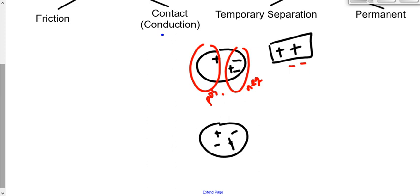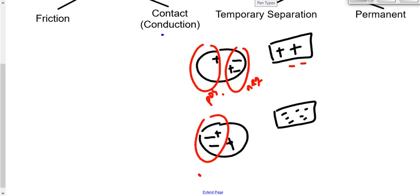Bringing a negative object nearby: the protons go nowhere because of the strong nuclear force, but the electrons get pushed away to one side, leaving that side negative and the opposite side positive. This neutral object is also attracted to the negative object because the closest side is oppositely charged — positive. Charged objects attract neutral objects because of this temporary separation of charge.